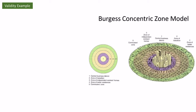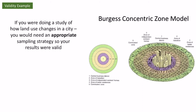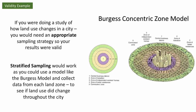An example: I need to make sure I've got an appropriate sampling strategy, which would make all of my results valid. If I'm looking at land use change in a city, I might use the Burgess model — the theory that separates a city into different land use zones, with suburbs on the edge and the CBD at the centre. Using a stratified sampling approach, I would collect data from each of those zones along a transect going into the city, allowing me to compare how land use changes from the commuter zone all the way into the CBD.